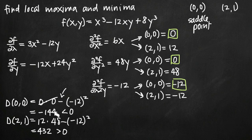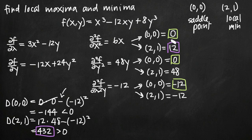If d is greater than zero — as it is for (2,1) where d equals 432 — we then look at fxx evaluated at that point, which is 12. If fxx is greater than zero, the critical point is a local minimum; if fxx is less than zero, it's a local maximum. Since 12 is greater than zero, (2,1) is a local minimum. Our final answer: (0,0) is a saddle point and (2,1) is a local minimum.